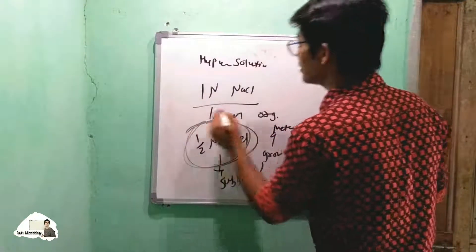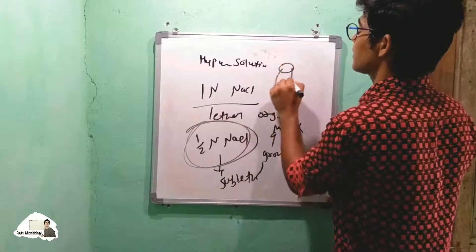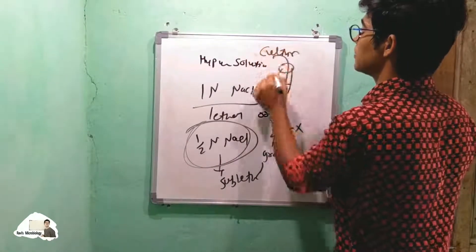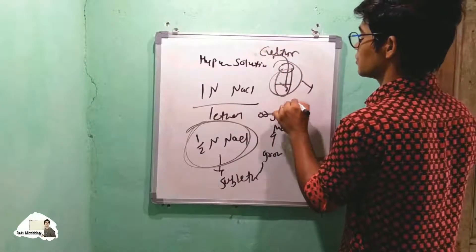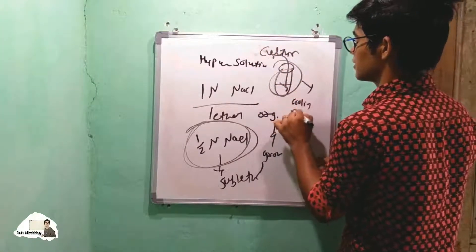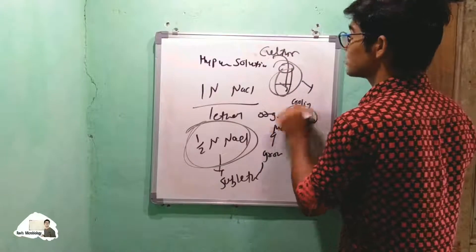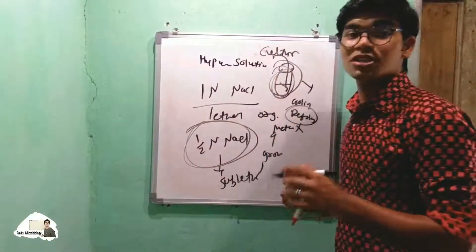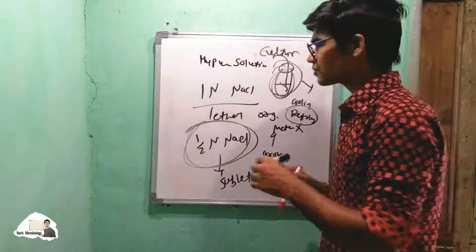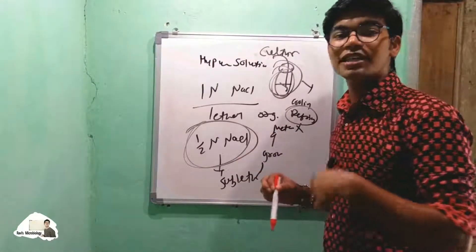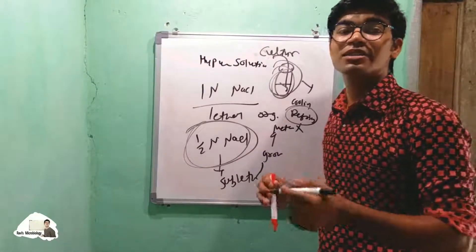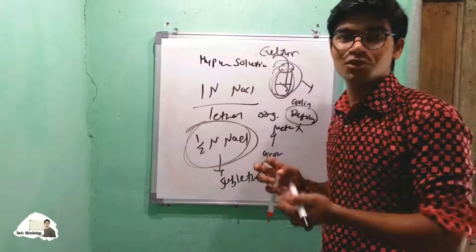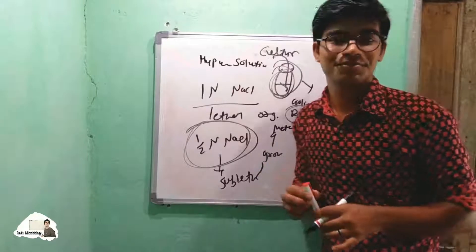By using half-normal NaCl, we add our culture and place the tube in a cooling refrigerator, where organisms remain preserved. This covers the first method, which includes four sub-methods. In our next lecture, we will discuss the second method: suspended metabolism. Thank you.